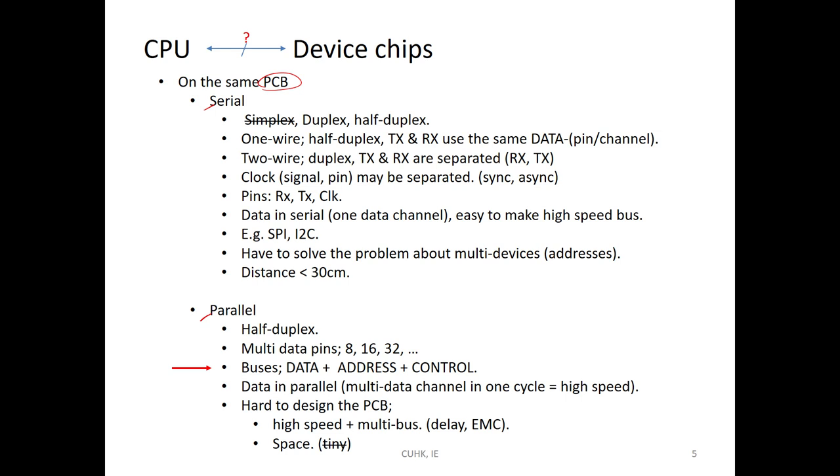If serial, if the TX and RX are combined using the same data pin, this is one wire, but the CPU cannot talk and listen at the same time. So this is half-duplex. If you separate the TX and RX, you have two wires, one for TX, one for RX. At this time, you can do full-duplex communication. If the clock signal is separated, it means it is synchronized. Asynchronized, you cannot find the clock signal.